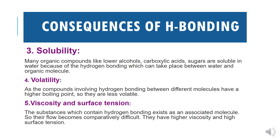Next, volatility: as compounds involving hydrogen bonding between different molecules have a higher boiling point, with increase in boiling point their volatile nature decreases. So compounds having a greater extent of hydrogen bonding will be less volatile. Next are viscosity and surface tension: these two phenomena are directly related to the types of forces which bind the molecules together. As hydrogen bonding is responsible for the association of molecules, viscosity and surface tension will become higher, since the tendency of liquids to flow decreases with increase in hydrogen bonding.